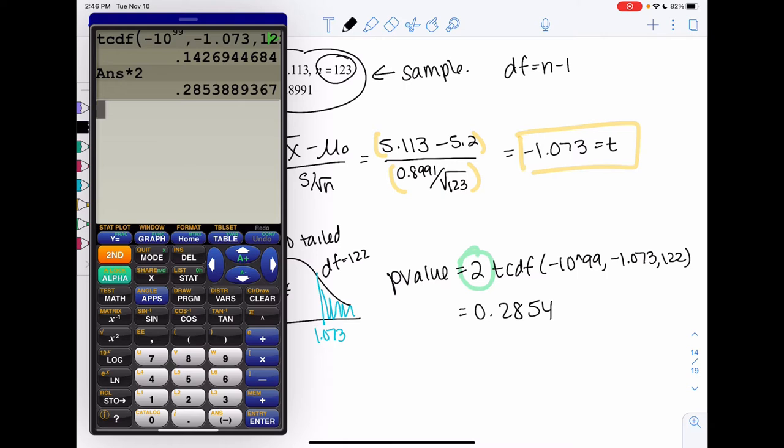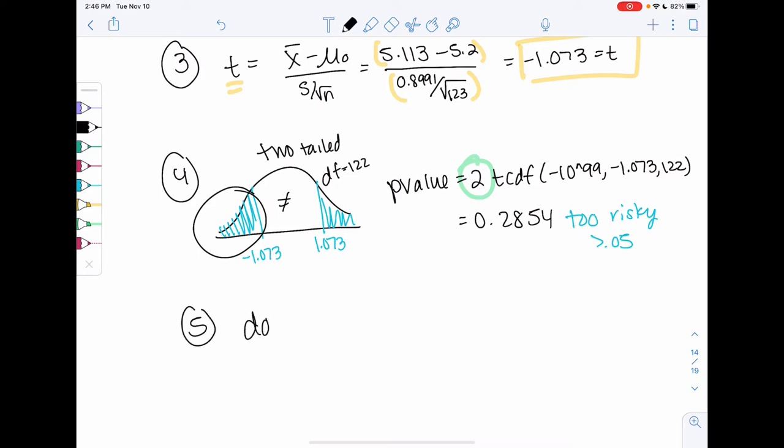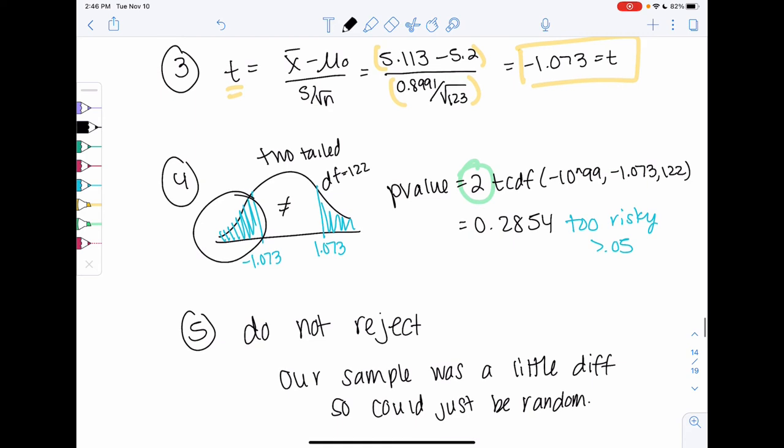So 0.2854. Too risky. If this mean is still equal to 5.2, there's still a 28% chance this would randomly happen. So too risky. It's more than our cutoff of 0.05, so we would not reject. The idea is our sample was only a little bit different, so it could just be random. That's the only thing that changes is the formula. We use T-score, and we use T-CDF. Otherwise, this should feel very similar to proportions.